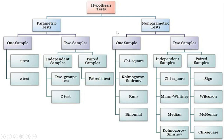As a summary: hypothesis testing can be of two types — parametric and non-parametric. For parametric, if we have one sample, we can use Z or T test. If there are two samples, we can divide them into independent samples or paired samples. For independent sampling we use the independent samples T-test, and for paired sampling we use the paired samples T-test. If there are two proportions, then we can use the Z-test.